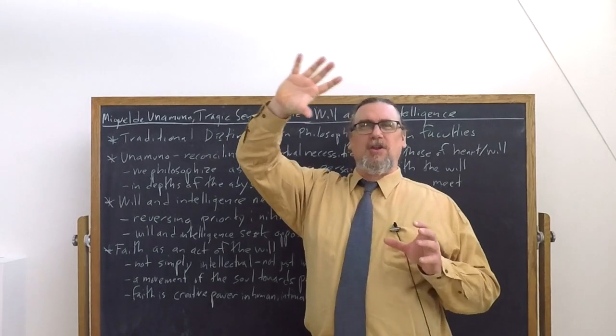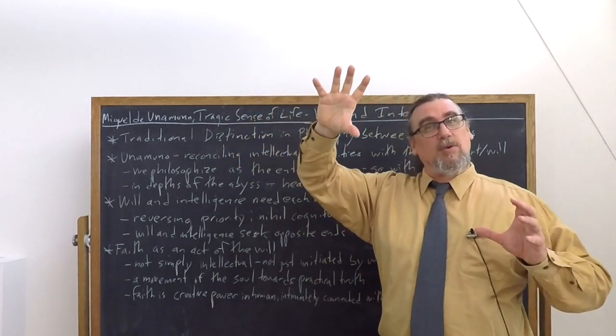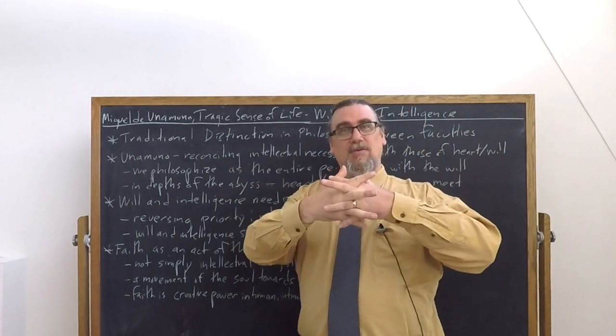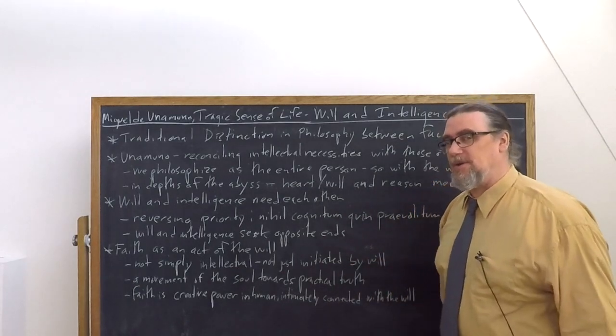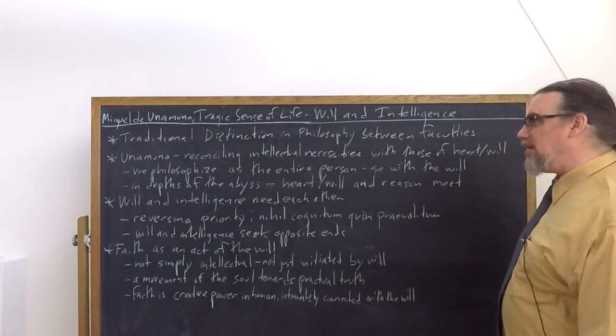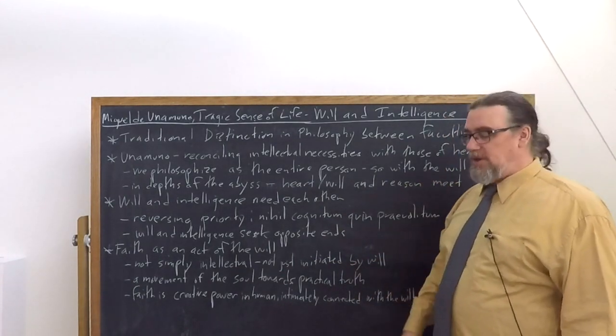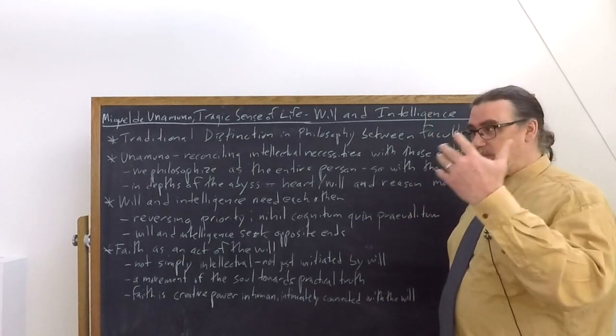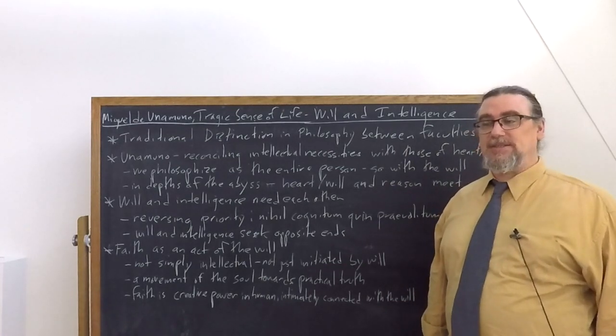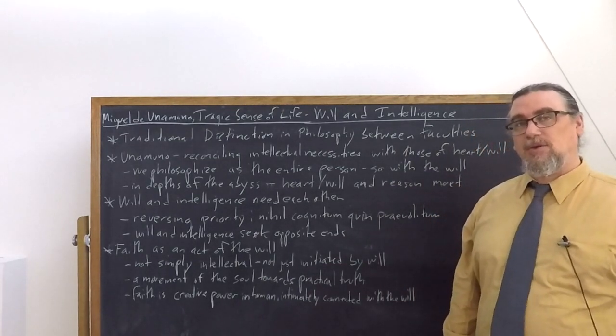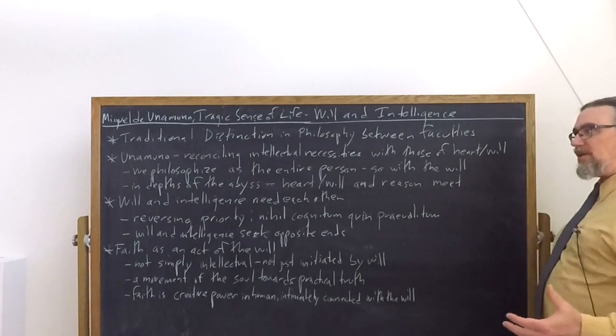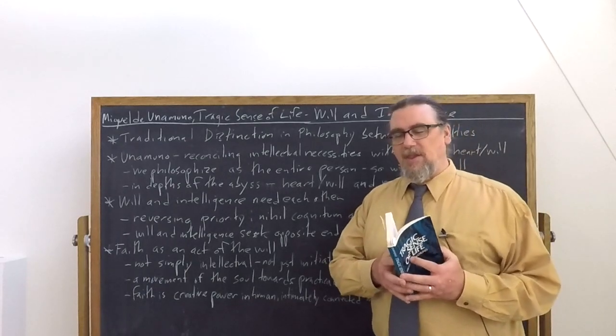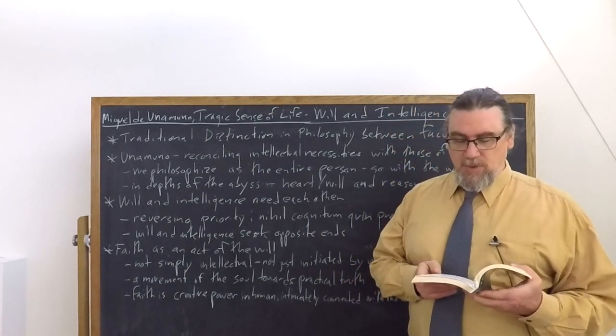This goes back to Thomas Aquinas' discussion of the relation between the will and the intellect in the Summa Theologiae, which is higher, the will or the intellect. One argument is that the will directs the rational faculties, not in their actual exercise, but to what their proper objects ought to be. So I think about a problem because I want to think about that problem because I feel it's important and because I choose to focus on that as opposed to the many other things I could be thinking about. Thomas will say the intellect is above the will. What's going on with Unamuno is they're really on the same level and interfused with each other.